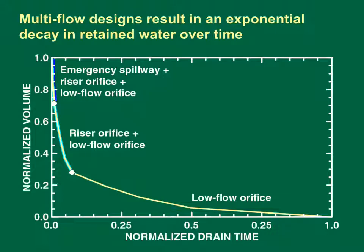Multi-flow designs result in an exponential decay in retained water over time. This graph shows normalized volume on the vertical axis and normalized drain time on the horizontal axis. At brim full, the emergency spillway, riser orifice, and low flow orifice quickly drain down the pond volume. Once the water level falls below the emergency spillway, the riser orifice and low flow orifice continue to drain at a decreasing rate as the water level falls. Once the water volume drains below the riser orifice, the low flow orifice continues to drain at a decreasing rate as the water level continues to fall.